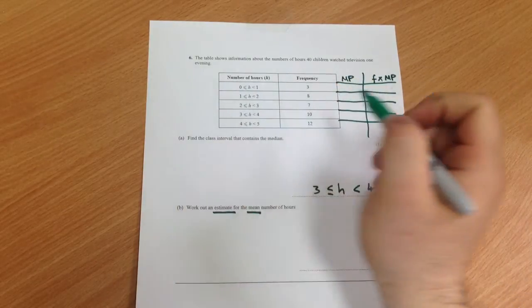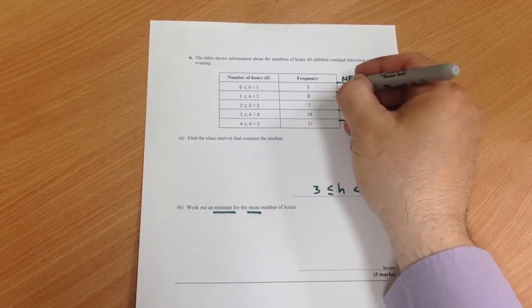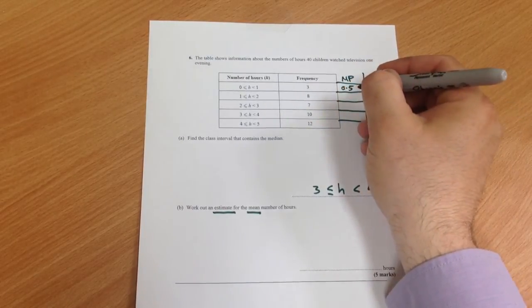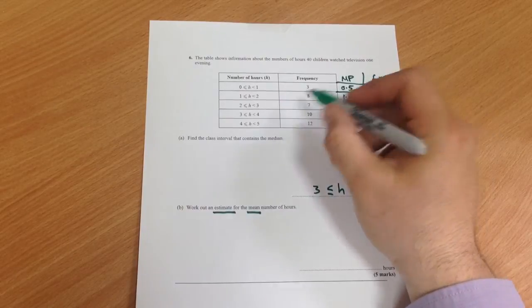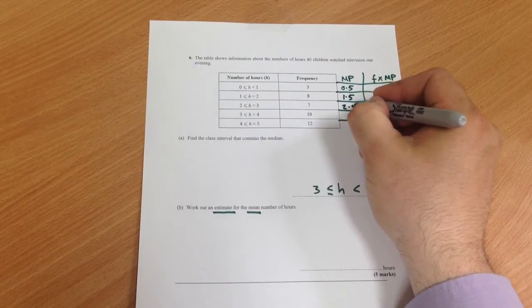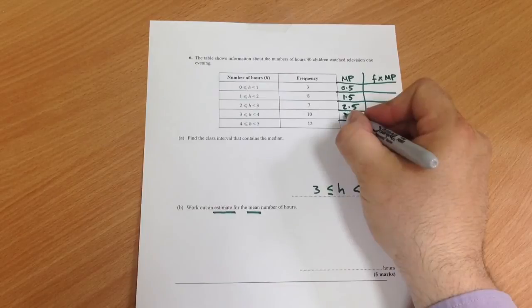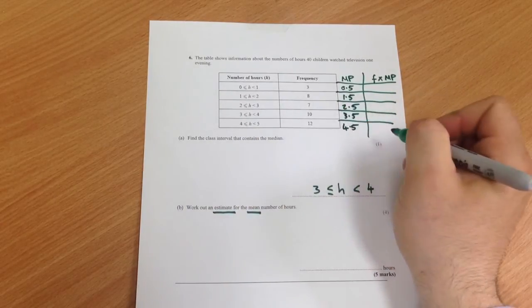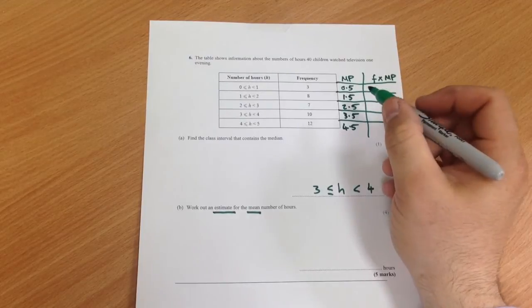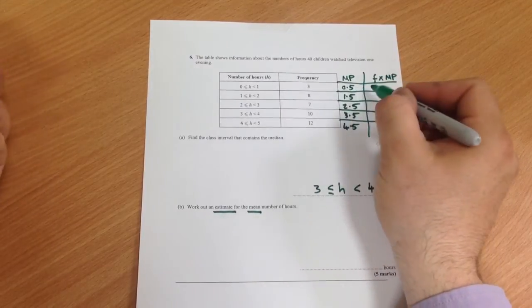So the midpoint between 0 and 1 is 0.5, the midpoint between 1 and 2 is 1.5, between 2 and 3 is 2.5, 3 to 4 is 3.5, and 4 to 5 is 4.5. Now multiply frequency by midpoint.